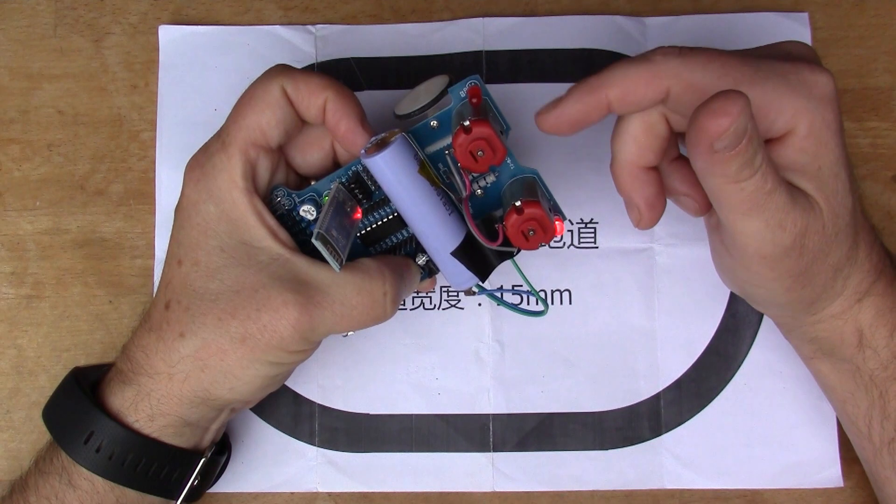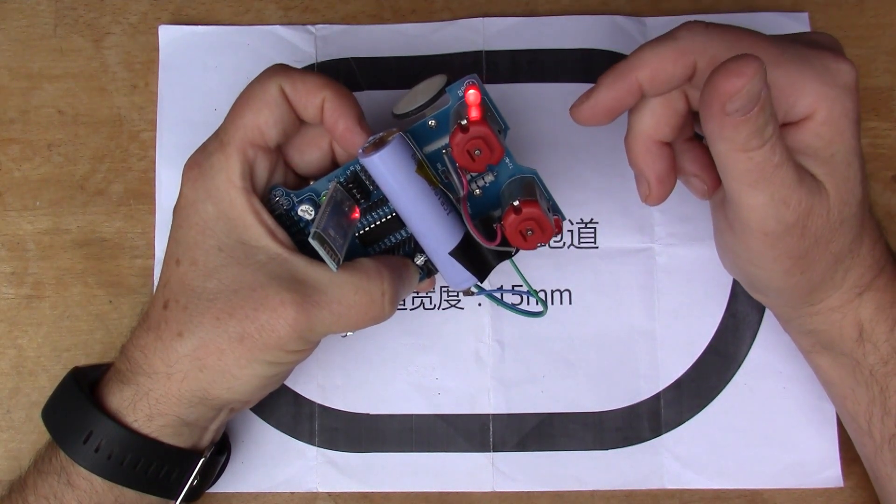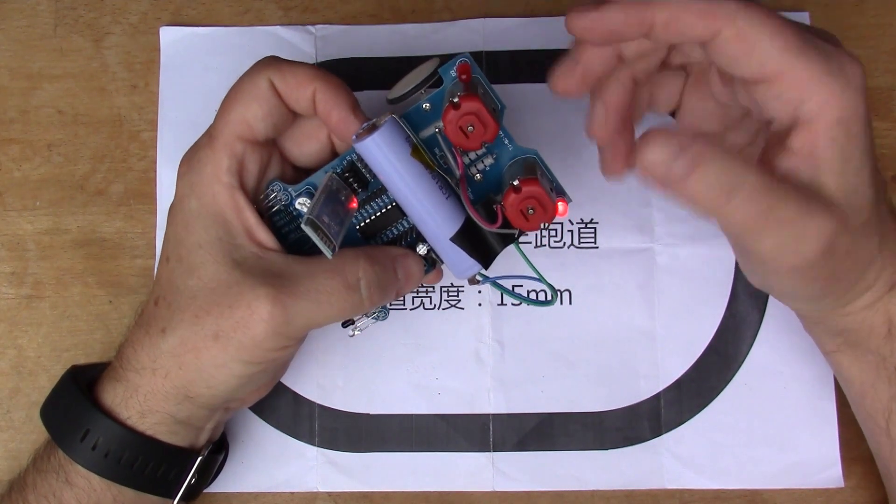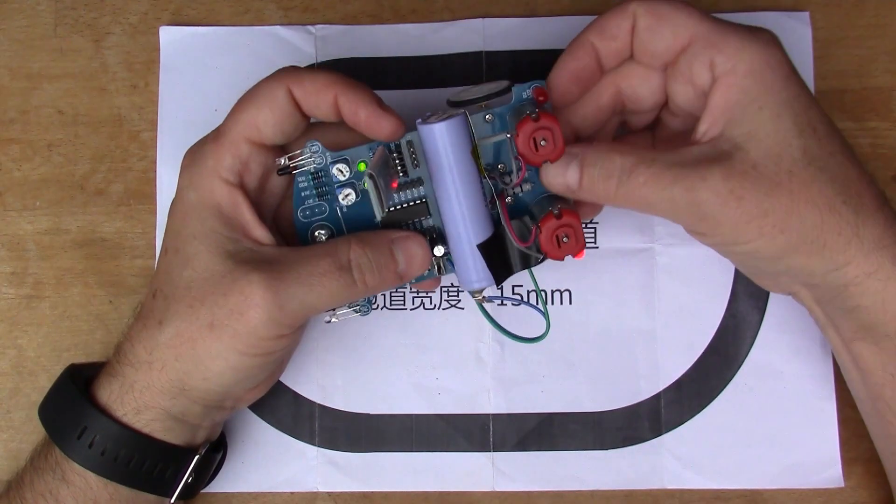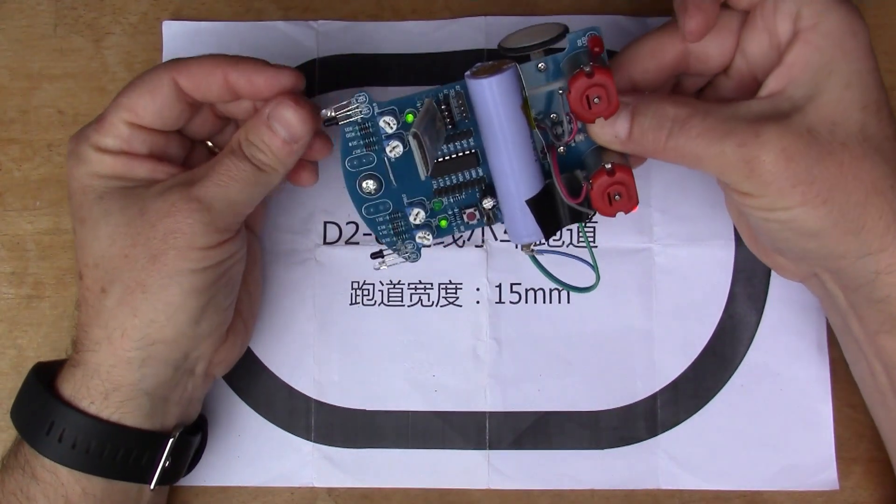It cycles around those different modes. So if we release in that second mode, it's now in the object avoider mode.